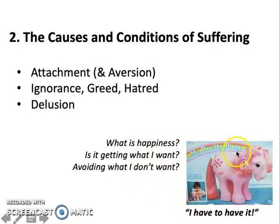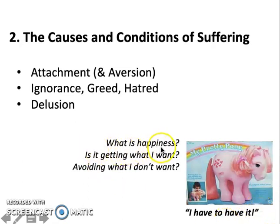My niece, who was about six years old at the time, was shopping and she saw a My Pretty Pony. And she said, 'I have to have it.' I think that's a fantastic example of attachment — and the attachment that causes its opposite, aversion. Not, 'oh, that's a My Pretty Pony,' but 'I have to have it. I can't be happy without it.' So the question is: is happiness getting what I want and not getting what I don't want? Buddhism says that's what we conventionally assume, and that's a trap.